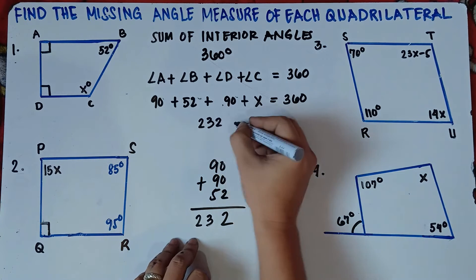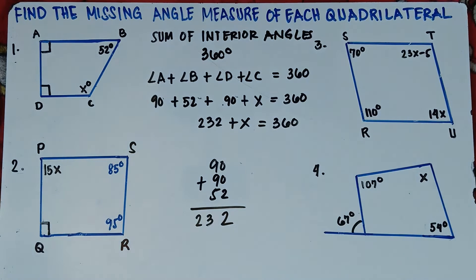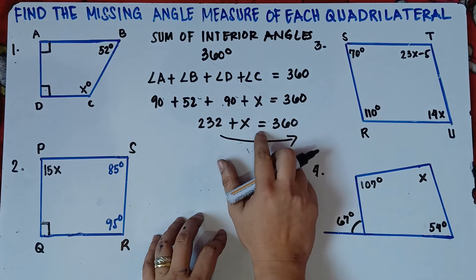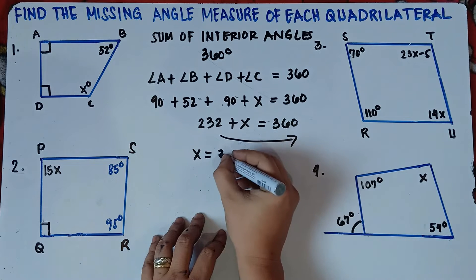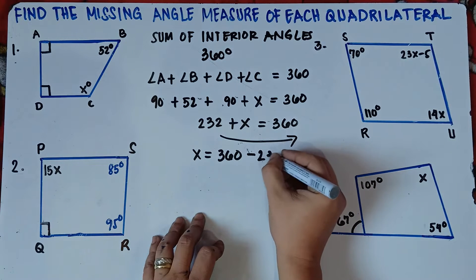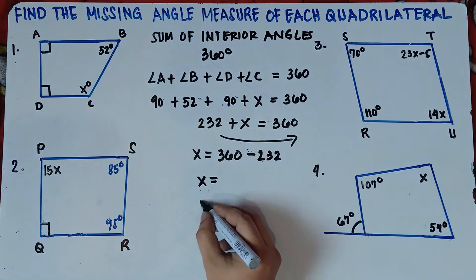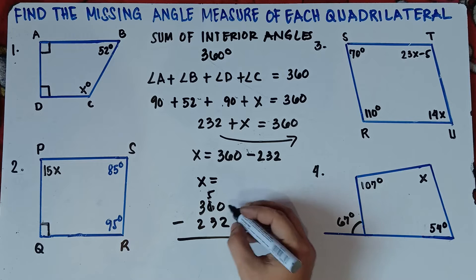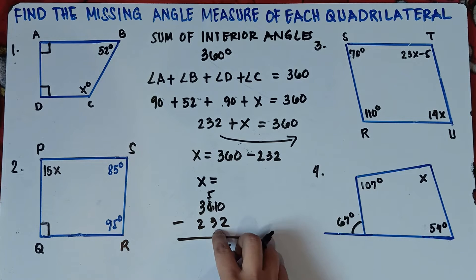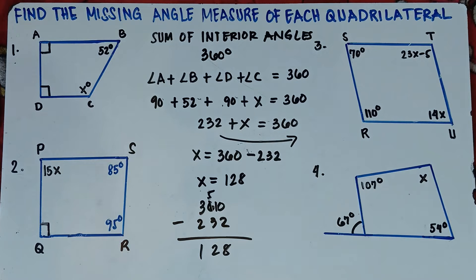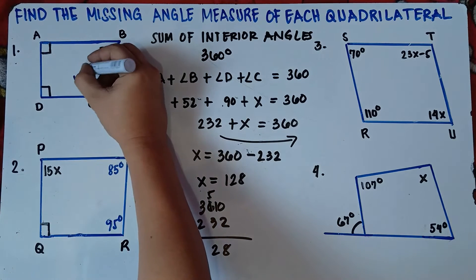So this is 232 plus X equals 360. To get the value of X, just simply transpose 232 from left to right, and it will change the sign. So X equals 360 minus 232. Borrow 1: 10 minus 2 is 8, 5 minus 3 is 2, 3 minus 2 is 1. That's 128. Therefore X equals 128, so angle C is 128 degrees.